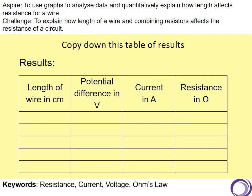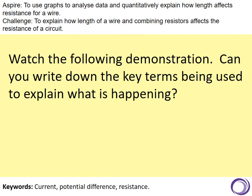In this experiment, the independent variable is the thing that we're going to change and we're going to change the length of the wire. Now, what I'd like you to do is watch the following demonstration and can you write down the key terms being used to explain what's happening. You'll need to write down certain notes ready to write down the experiment write-up at the end of this lesson.